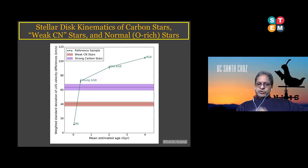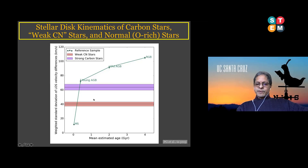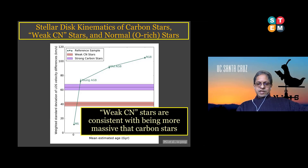We also see a trend in kinematics consistent with the earlier results: short-lived stars have the most regular kinematics, long-lived stars the most irregular. The weak CN stars and carbon stars appear to follow that trend — carbon stars are more like AGB stars, and weak CN stars are more like even more massive stars. Their kinematics suggest they are consistent with massive stars. This paper is in progress.